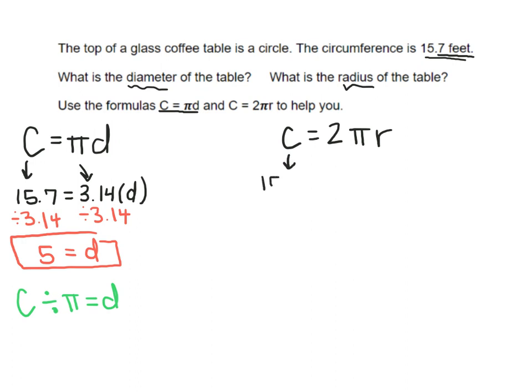I'm still going to use 15.7 as the circumference. 2 is given to us and so is π, 3.14. What I don't know is radius.